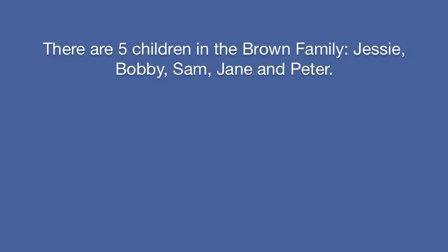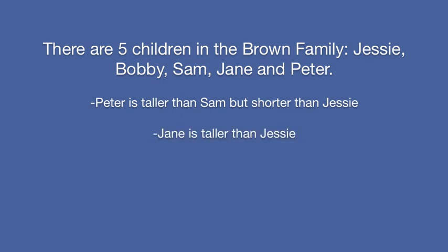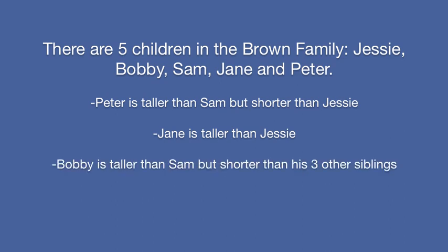Today's question is, there are five children in the Brown family: Jesse, Bobby, Sam, Jane and Peter. Peter is taller than Sam, but shorter than Jesse. Jane is taller than Jesse. Bobby is taller than Sam, but shorter than his three other siblings. Who is the third tallest child?